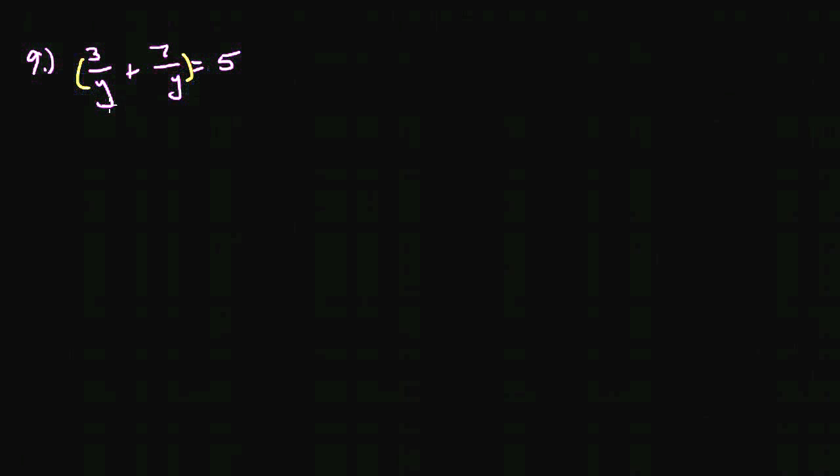And since we only have the denominator of y, because this 5 is 5 over 1, I can multiply both sides by y. And that will effectively get rid of these denominators. Because 3 times y is 3y, and y over y cancels. So 3 is left there, plus y times 7 is 7y, and those y's cancel, and I'm left with just the 7 there. And that's equal to 5 times y, or 5y.